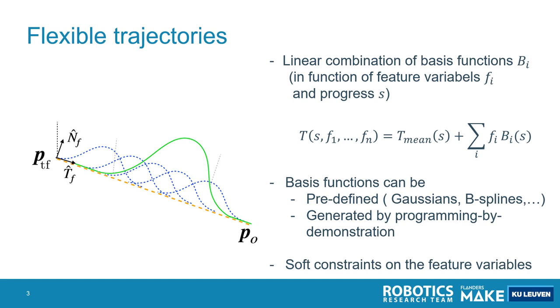These flexible trajectories are linear combinations of basis functions—basis functions multiplied by a feature variable. These basis functions are a function of a progress variable S and are added to a mean trajectory. In this way, we can define relatively flexible trajectories.